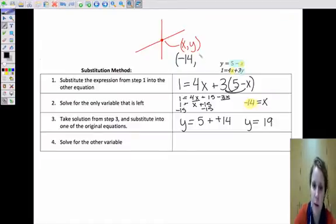Alright, so now we've found out that this y, where they meet, is 19. So this point is negative 14, 19. So the solution point, negative 14, 19.